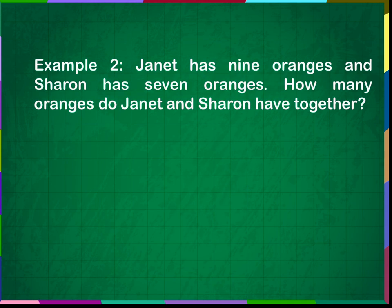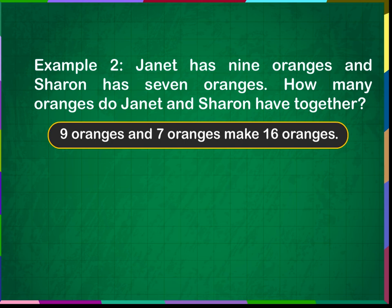Example 2: Janet has nine oranges and Sharon has seven oranges. How many oranges do Janet and Sharon have together? Nine oranges and seven oranges make sixteen oranges. Nine plus seven is equal to sixteen. Janet and Sharon together have sixteen oranges.